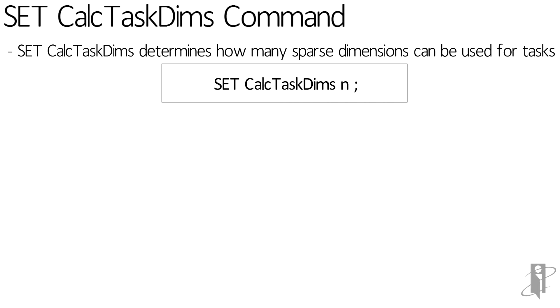We know that we don't tend to add scenarios together, and we don't add versions together, and we definitely don't add a scenario to a version to a year together. So we might want to set the CalcTaskDims equal to some number bigger than one — let's say three.